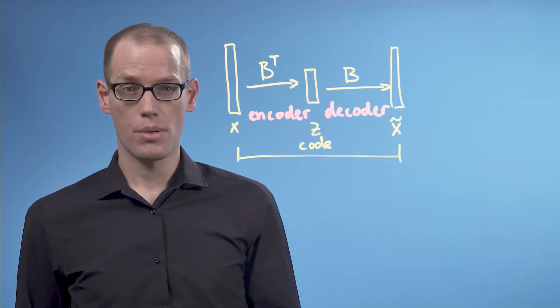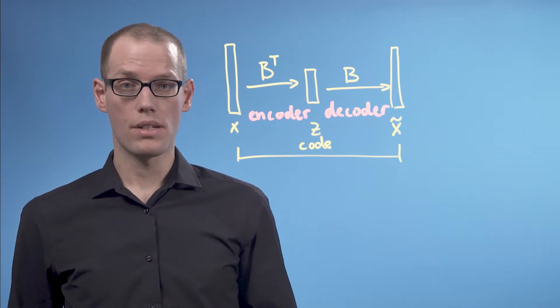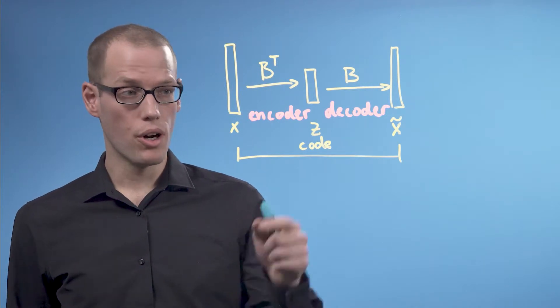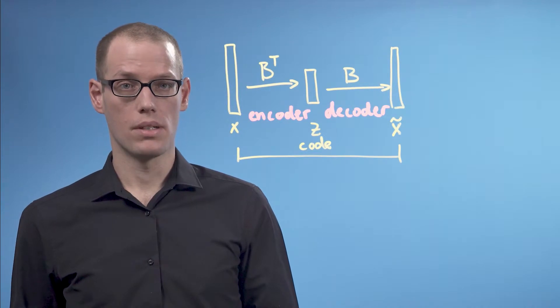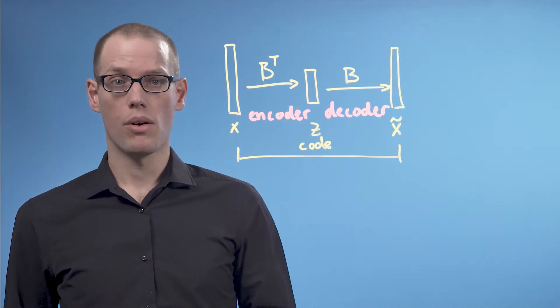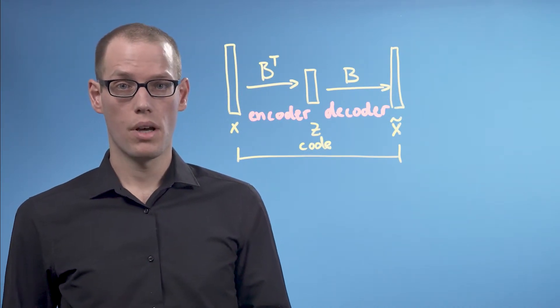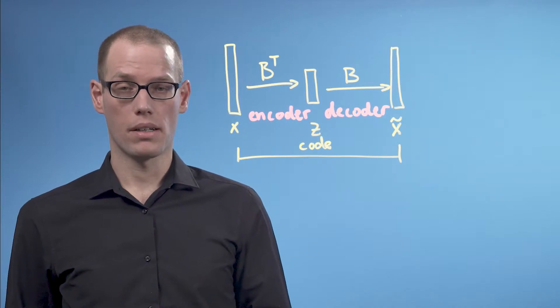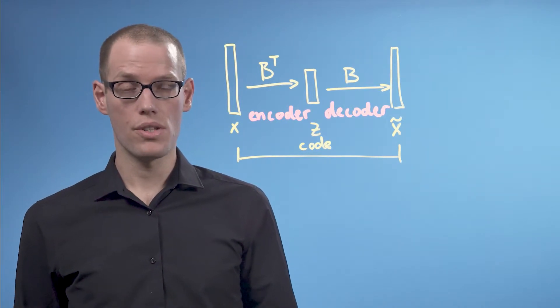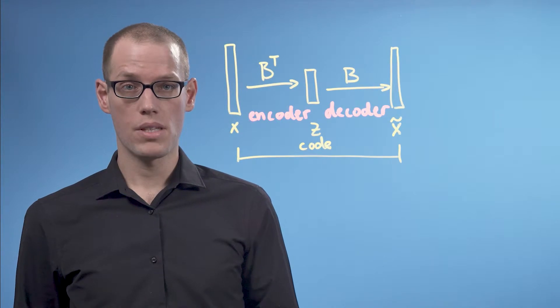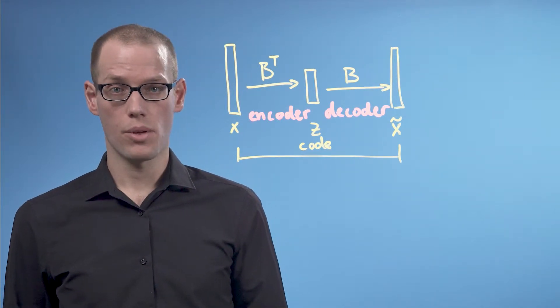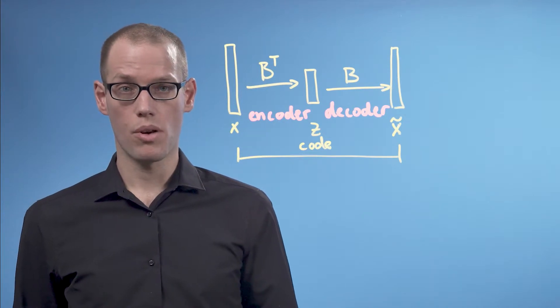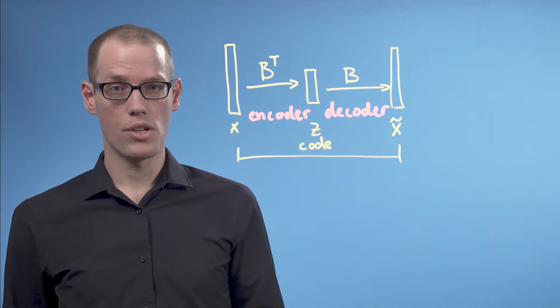Another interpretation of PCA is related to information theory. We can think of the code as a smaller compressed version of the original data point. When we reconstruct our original data using the code, we don't get the exact data point back, but a slightly distorted or noisy version of it. This means that our compression is lossy. Intuitively, we want to maximize the correlation between the original data and the lower dimensional code.